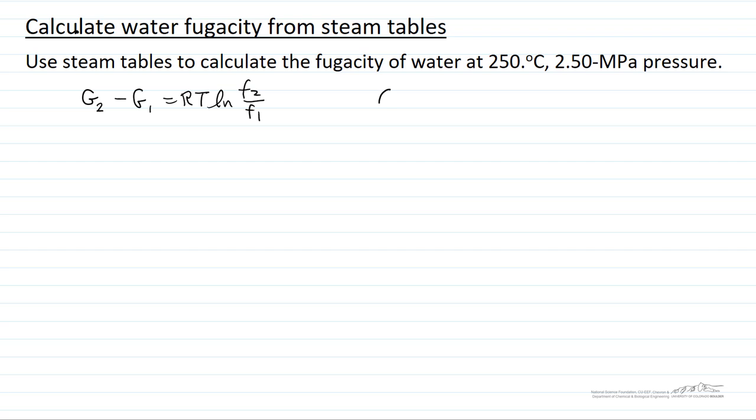And of course we're going to use the steam tables because we have enthalpy and entropy and so we can get Gibbs free energy. So what we're going to do is pick two conditions. One condition 250 degrees C, 2.5 megapascals. The other condition 250 degrees C and a low pressure 0.01 in the steam tables. Because at a low pressure, we know the fugacity.